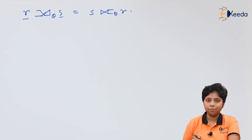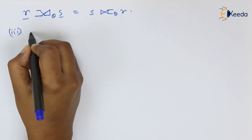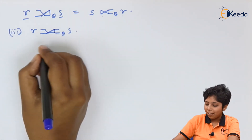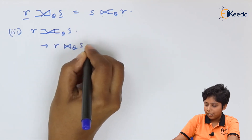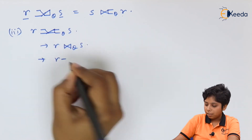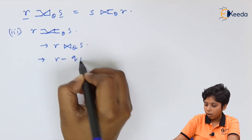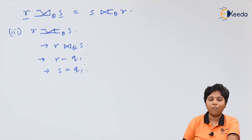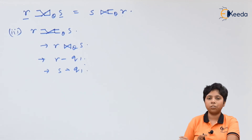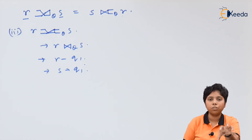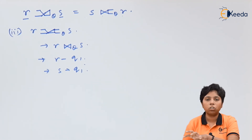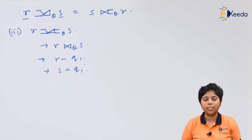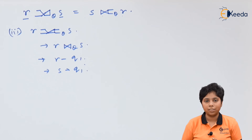For the full outer join, we first compute the theta join on r and s saved in q1, then compute r minus q1 and also s minus q1 to get our result. Finally, we add all tuples to the result, padding null values for tuples in r with no match in s and null values for tuples in s with no match in r. This way we can compute each outer join as a result of set operations.